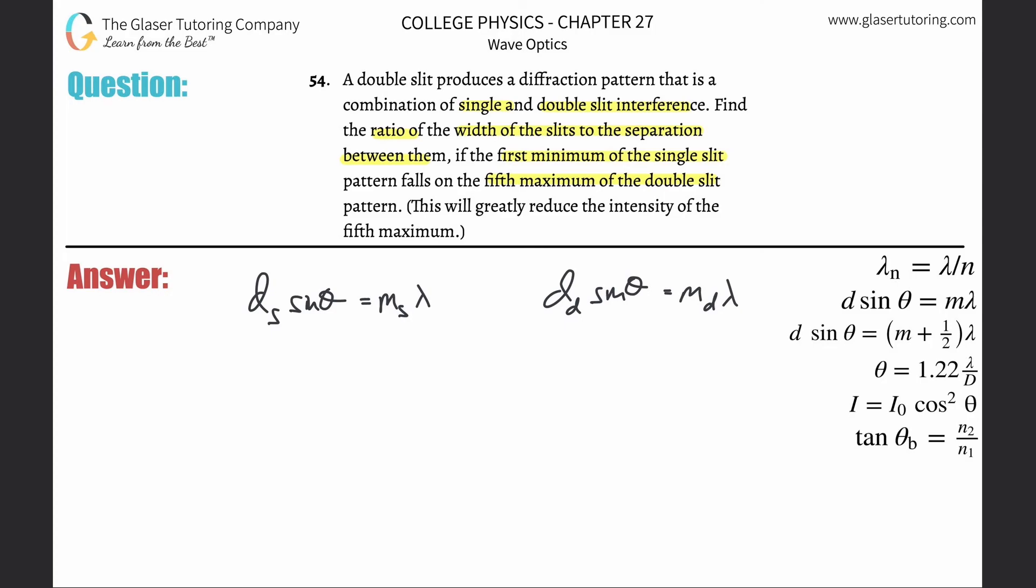Now what I realize is, well, maybe I can find a ratio, because that's kind of what they're asking, right? Find a ratio. So what I will do is I will take this, DS sine theta equals MS times the wavelength, and now divide that by basically this formula.